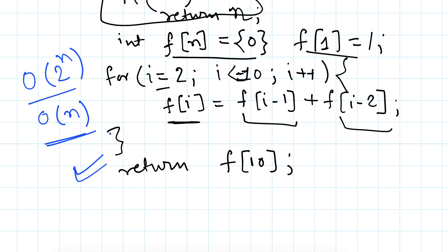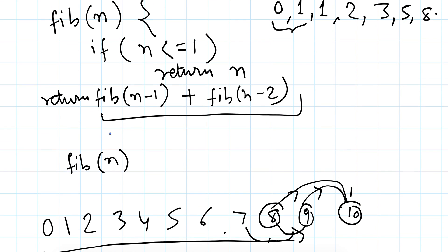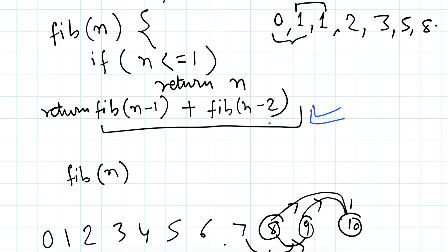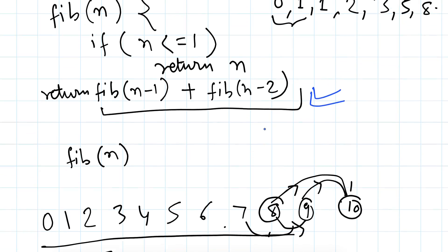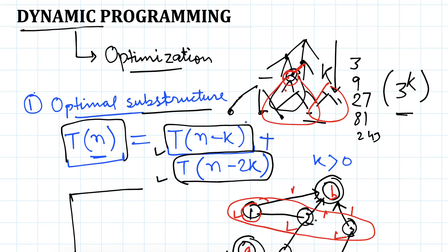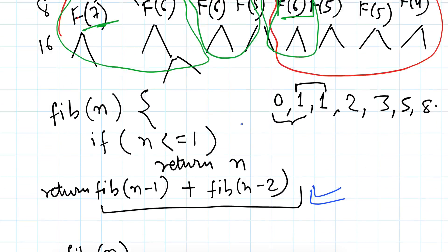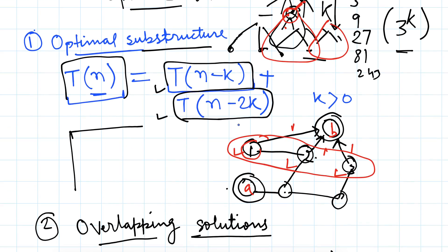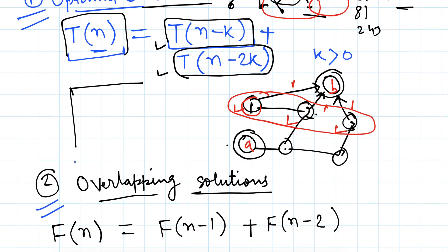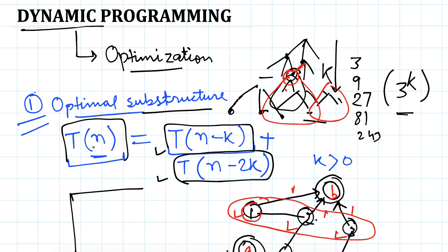That is why dynamic programming is used wherever we have a problem that can be solved using a recursive solution but there will be a large number of overlaps between the sub-problems. If there is no overlap, we will not gain anything. So this is the main idea behind dynamic programming: optimal substructure and overlapping subproblems. Thanks for watching — give your valuable feedback in the comments below and don't forget to subscribe if you like it.